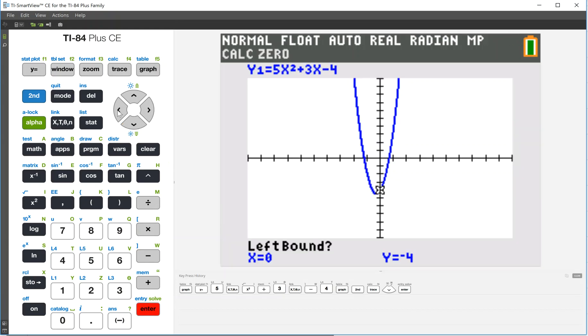It asks us for a left bound. So really what it's asking us is how far left do you want to search. So let's just put the cursor to the left of this left zero. And now it says give me a right bound, so we'll move it to the right. Hit enter. Now we're going to be searching between these two vertical lines. And then it says give me a guess, we can just hit enter. And there we go, we found negative 1.24.